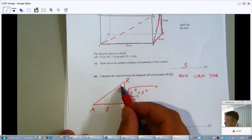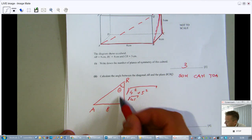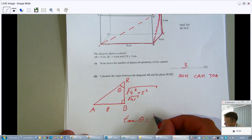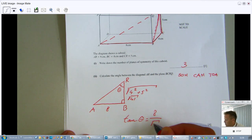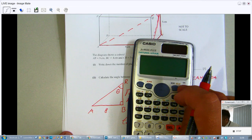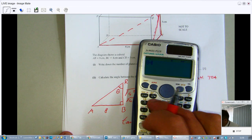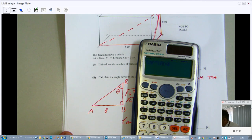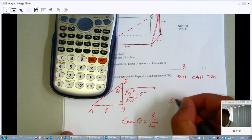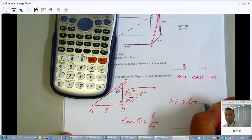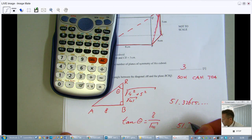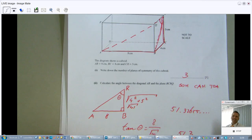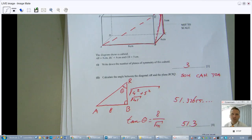I have the opposite, I have the adjacent, so the tangent of theta is opposite 8 over adjacent square root of 41. I'm gonna grab my calculator, so do 8 divided by square root of 41 equals, and then shift tangent of my answer, and then I get 51.3 to 51.365 degrees. So 51.3, fantastic.